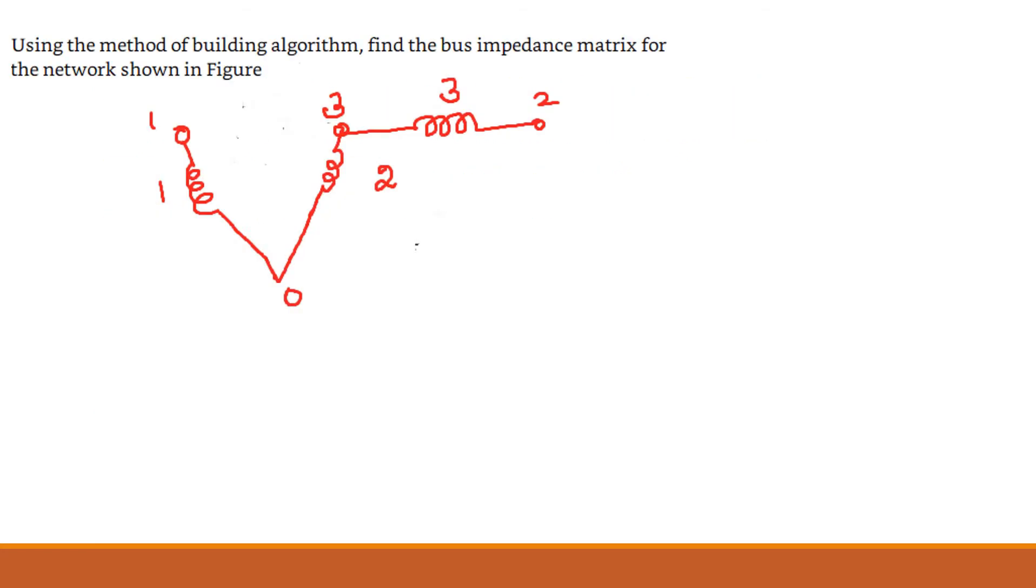Problem number 1: using the method of bus building algorithm, find the bus impedance matrix shown in the figure. Here this network consists of 3 buses - bus number 1, bus number 3, bus number 2. Three buses correspond to a 3×3 matrix. So Z bus consists of 3×3 and only one reference bus.